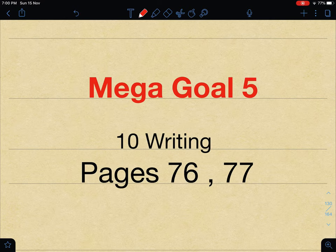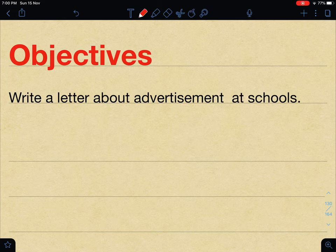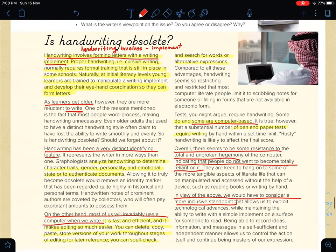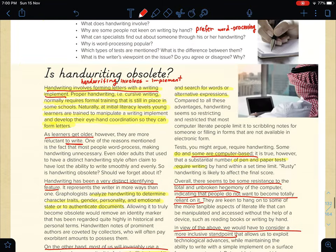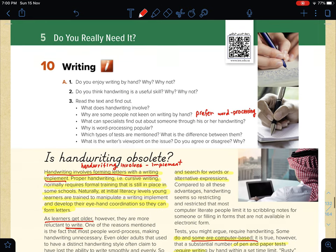Hello everybody. In Mega Goal number five, Third Secondary, the writing pages 76 and 77. Now let's take a look at the objectives. In this lesson you should be able, at the end of the lesson, to write a letter about advertisements at schools — whether they are good or bad. This is based on your own point of view or your own opinion. So right now I'd like you to move to pages 76 and 77 and let's start by discussing what we have here.